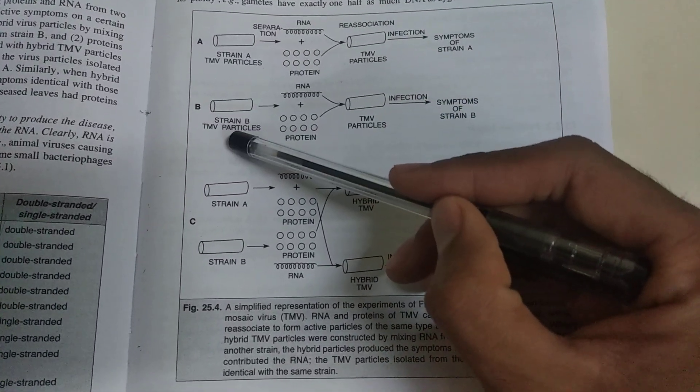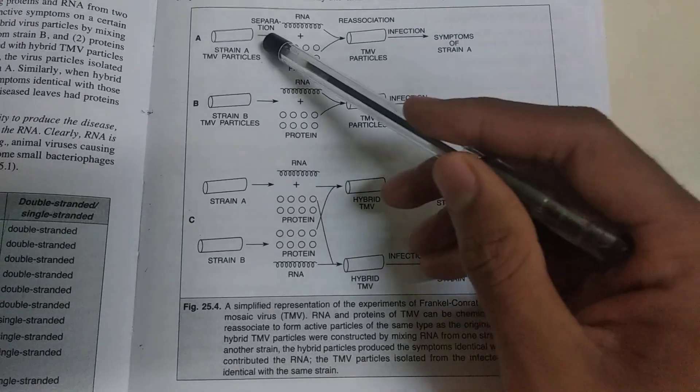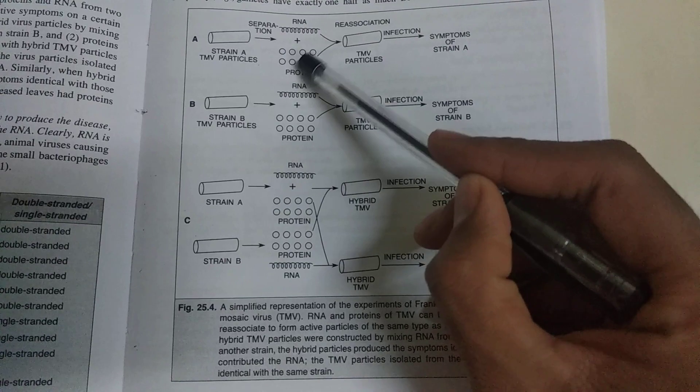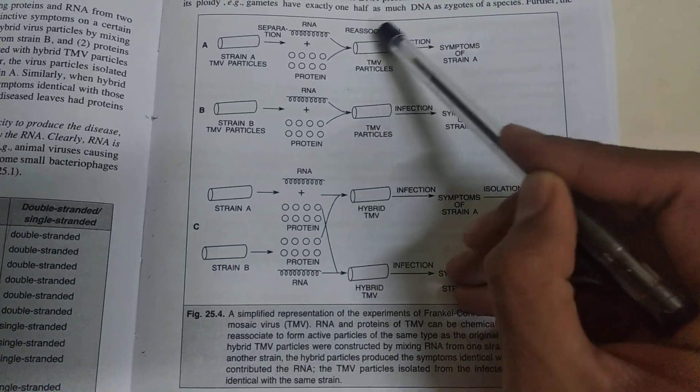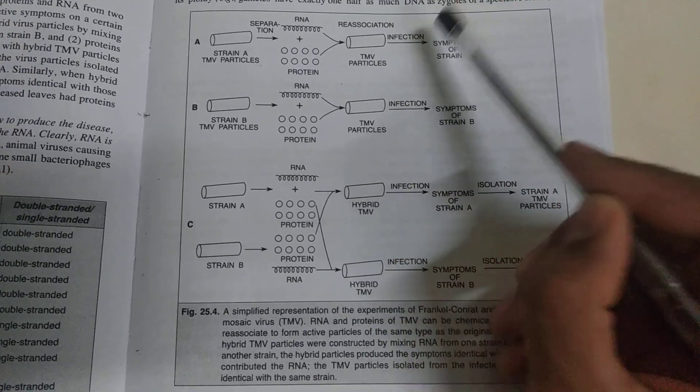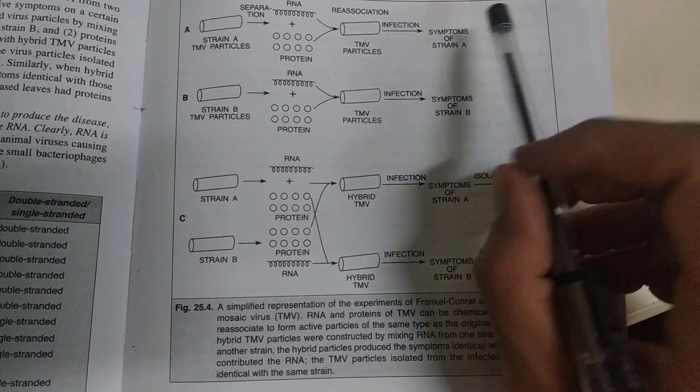Strain A of TMV particles were taken, and the separation of RNA and protein took place. After that, they infected the host and developed the symptoms of strain A.